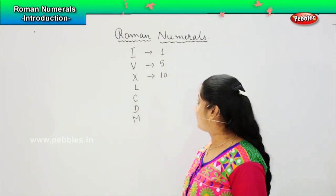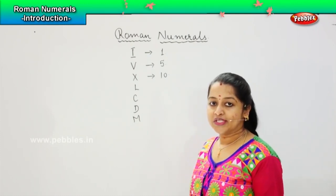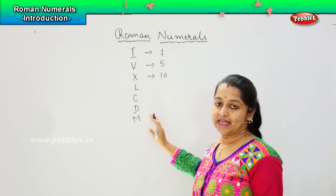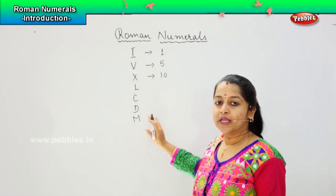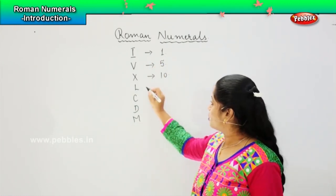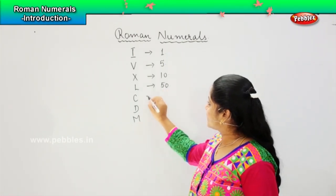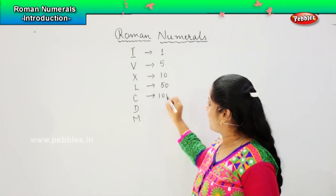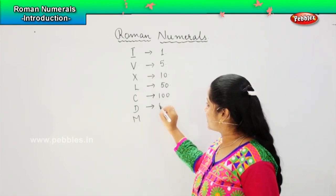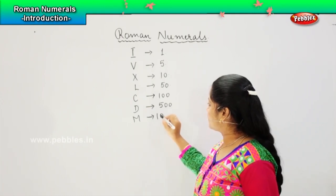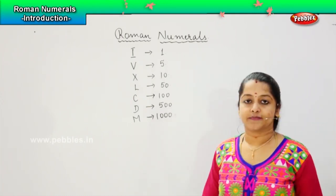These are the seven alphabets which Roman people used to follow, and with these seven alphabets they used to calculate their numbers. L represents 50, C represents 100, D represents 500, and M represents 1000.